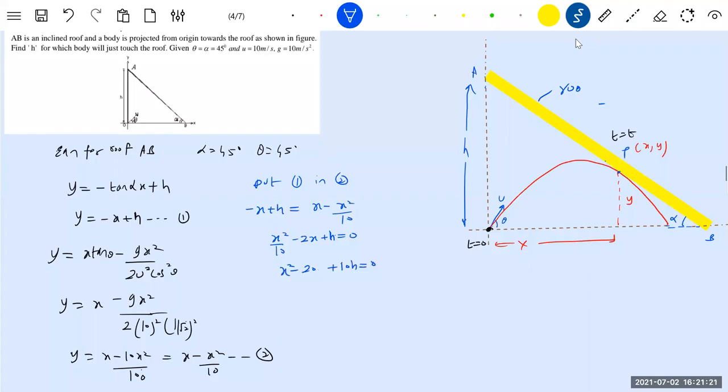Now we have another thing. So how many times should the projectile, the ball, touch? Only once. So therefore this root, this quadratic equation, only one root should be there. To have only one root, b² equal to 4ac.